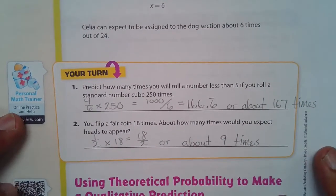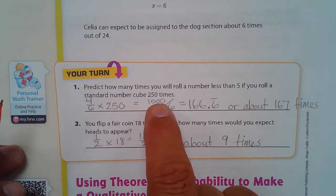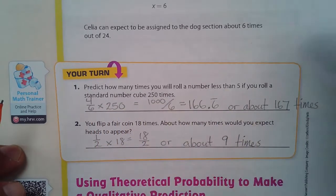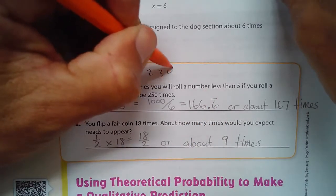All right, here's the your turn questions. Predict how many times you will roll a number less than five if you roll a standard number cube 250 times. Let's see, a number less than five. The numbers less than five are one, two, three, and four.